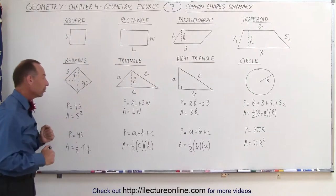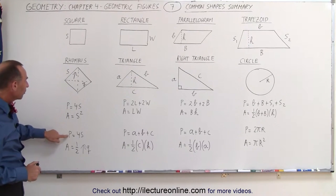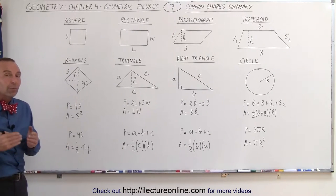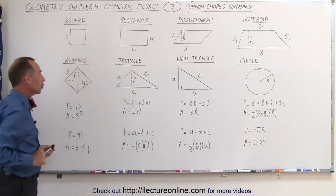And coming over here, we have the rhombus. The perimeter of the rhombus is four times the side, and the area would be one-half the product of the two diagonals, p and q.